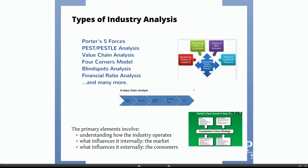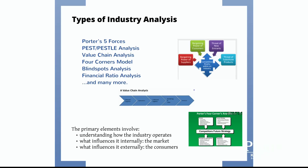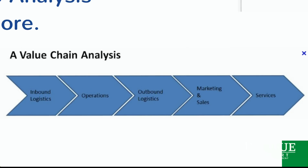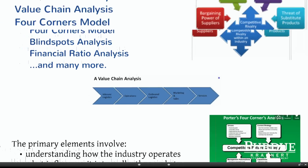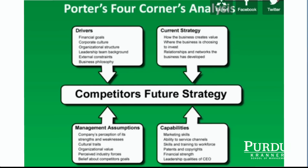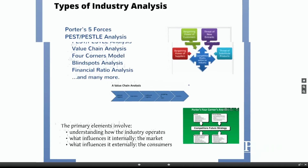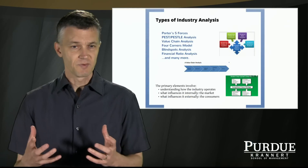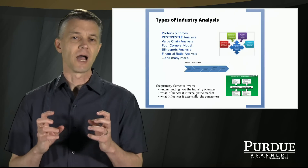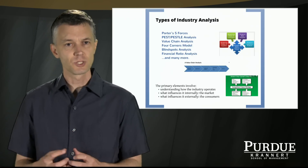You've got to be careful when you think about an industry and what the competition may or may not be. You can also look at things from other analysis perspectives: the value chain, which breaks down the functions of a company to see how it works within the industry, as well as Porter's Four Corners, which looks at drivers, current strategy, management's assumptions, and how capable they are. These types of analysis look at the primary elements of understanding how an industry operates and what is influencing it internally and externally.